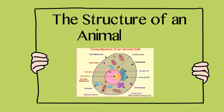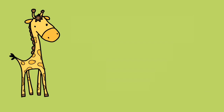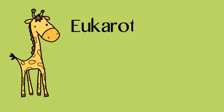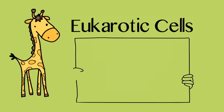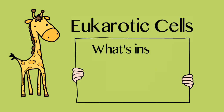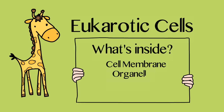Let's go over the structure of an animal cell. The cells I'm going over are eukaryotic cells, which contain a cell membrane, a nucleus, and organelles. Eukaryotes can be multicellular organisms or single-celled organisms.